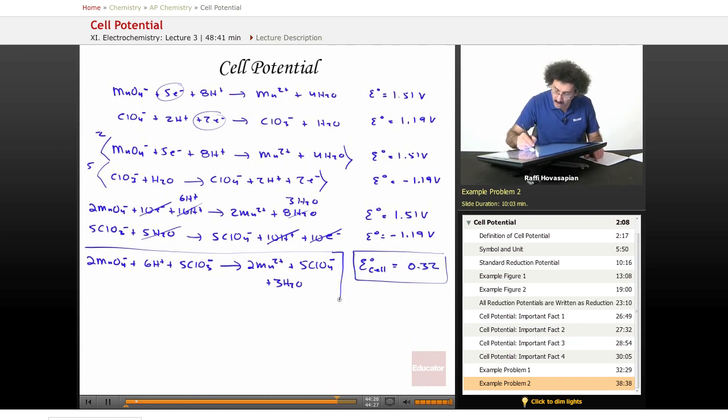So there we go. If I create a cell based on permanganate and chlorate, the potential for that cell is 0.32. That means that's a measure of the tendency for this reaction to happen if I were to open the circuit.